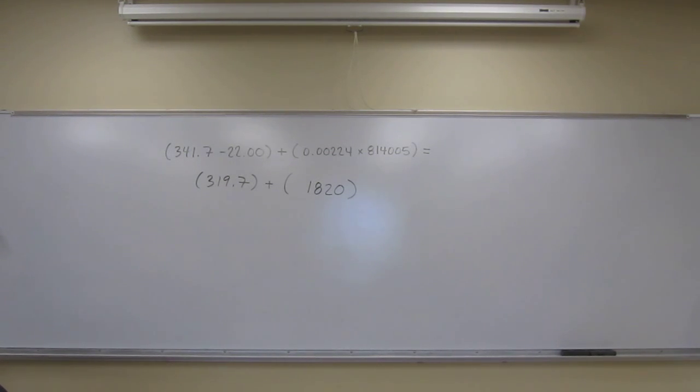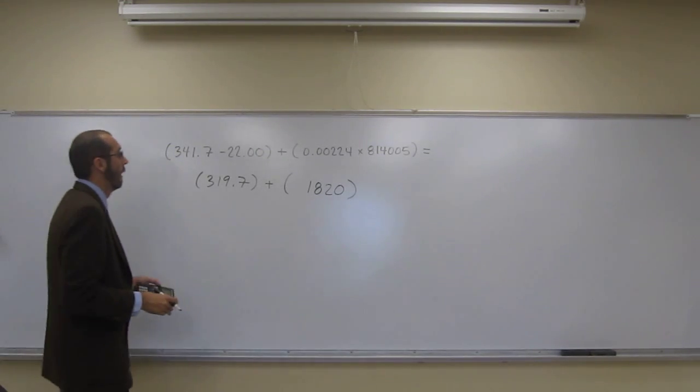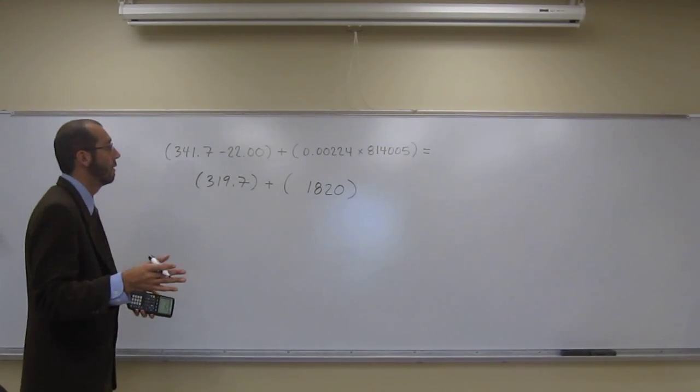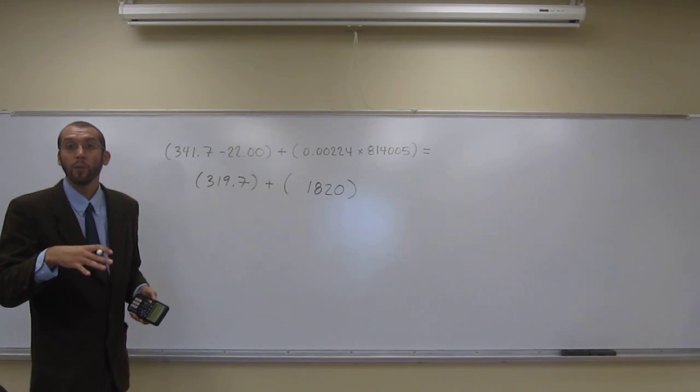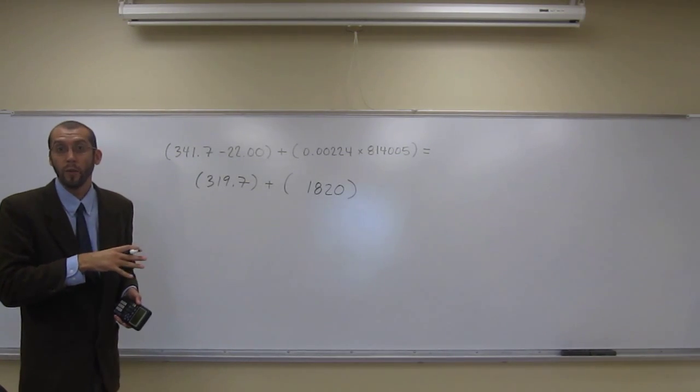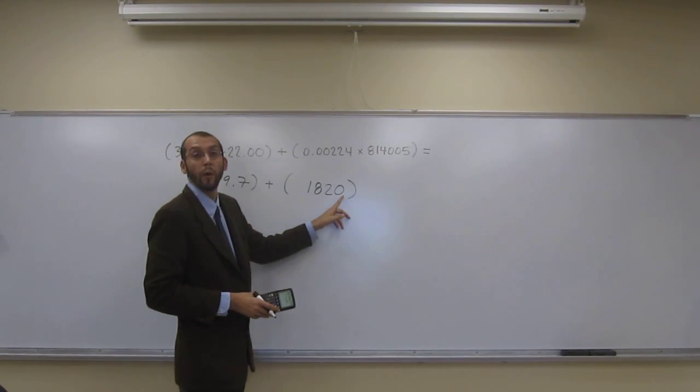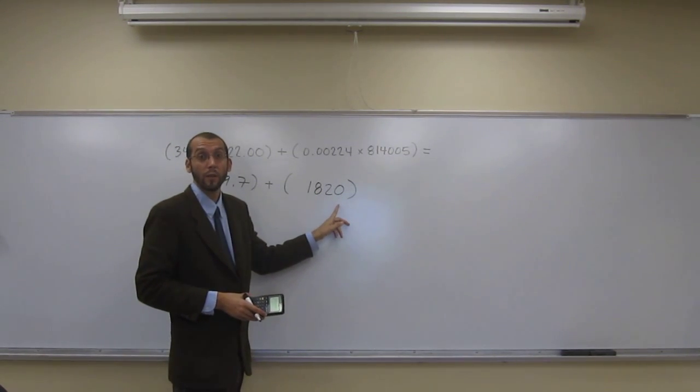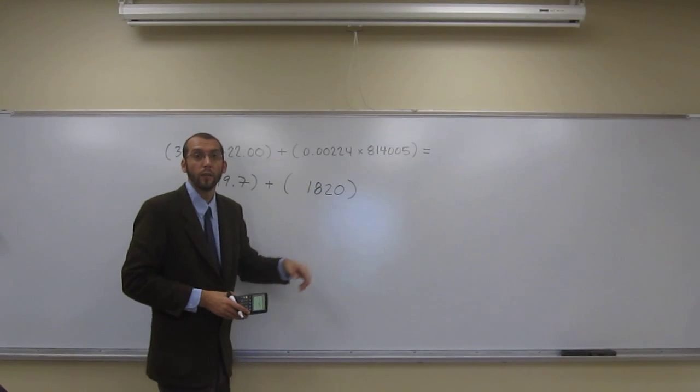What would happen if we put 1823 on it instead of 1820? That would have been four significant figures. So again, you've gotta use the significant figure rules for multiplication in this one. So whenever we don't have a decimal point there, that trailing 0 is not significant.